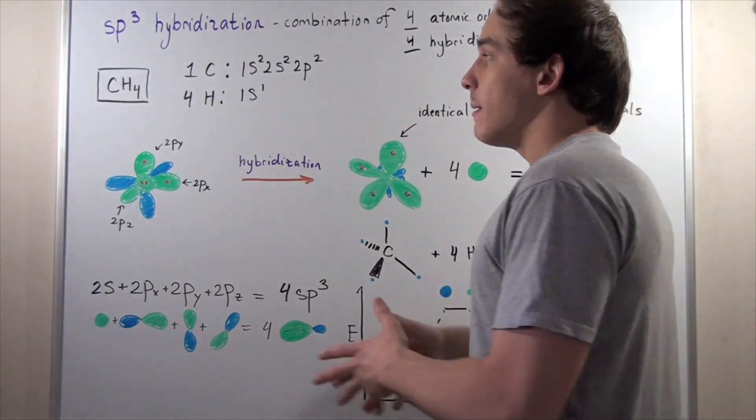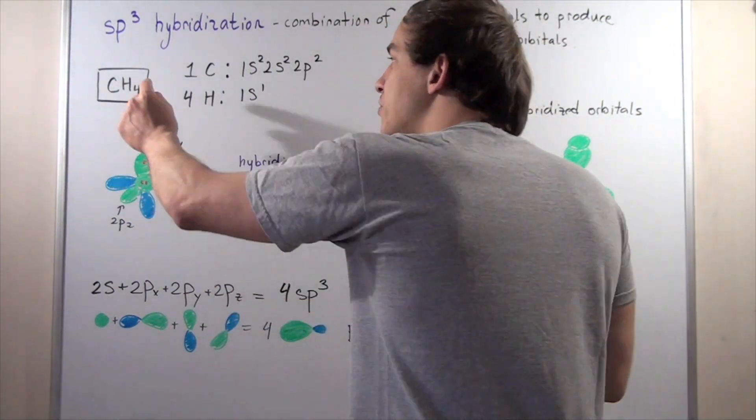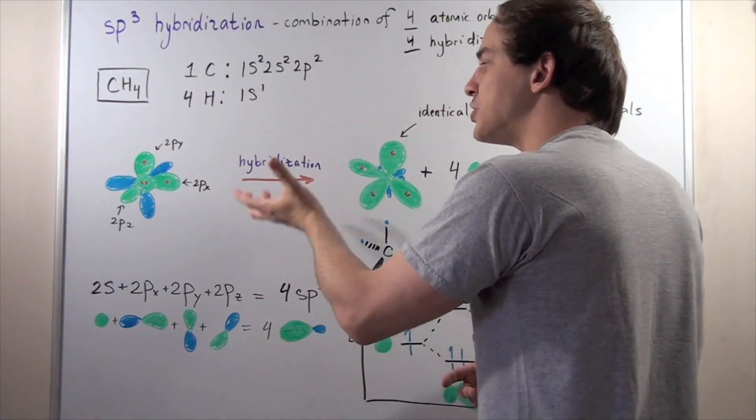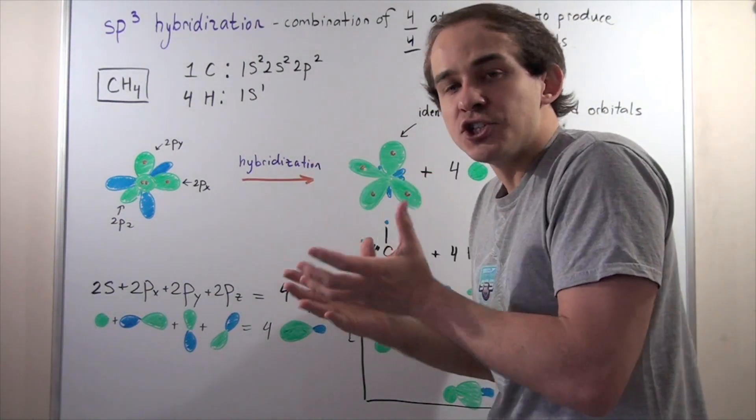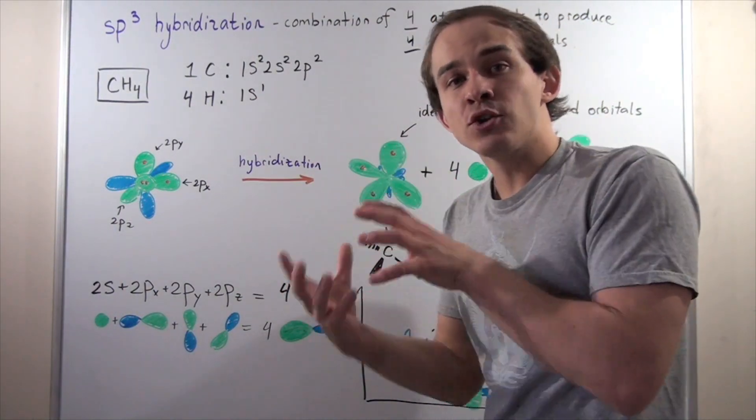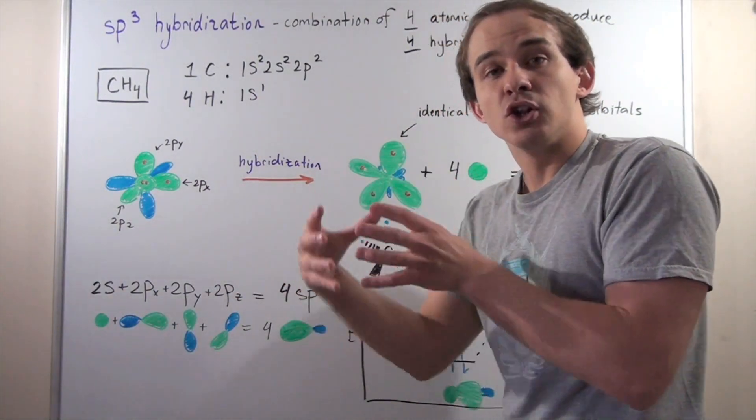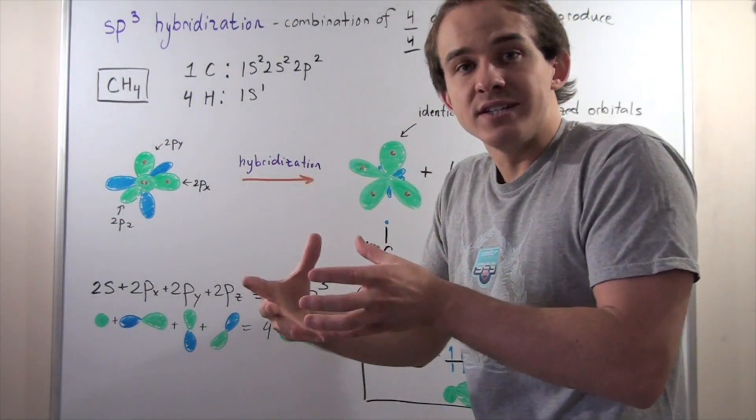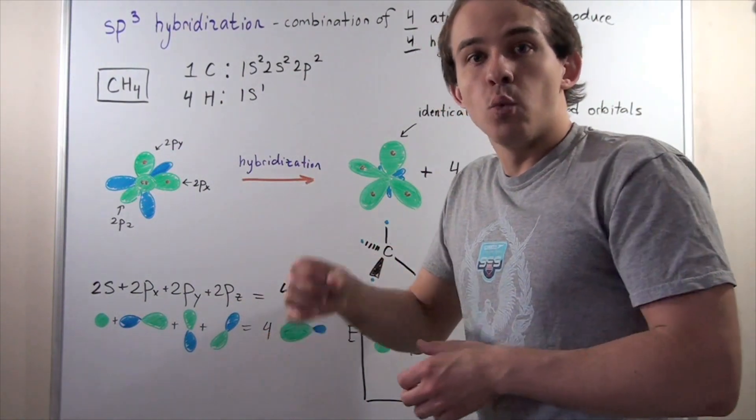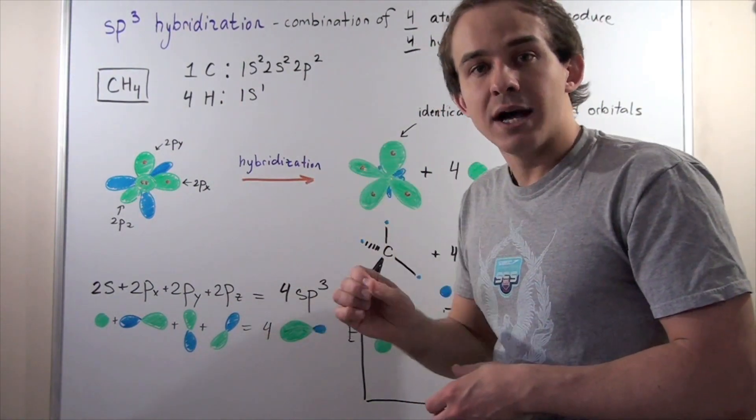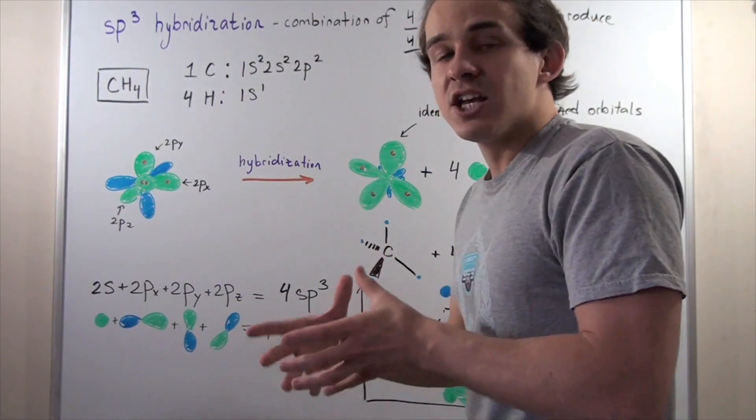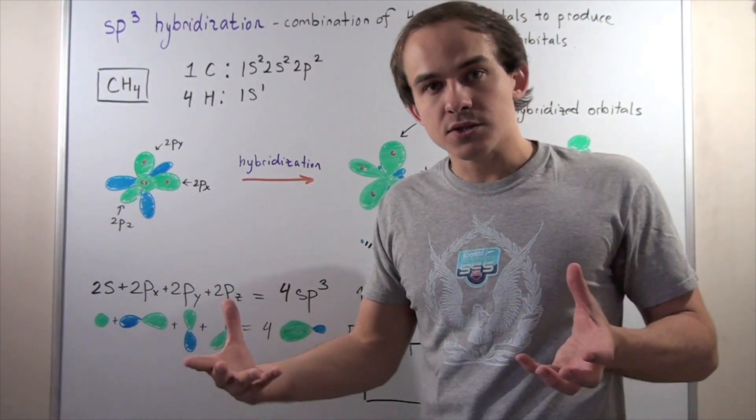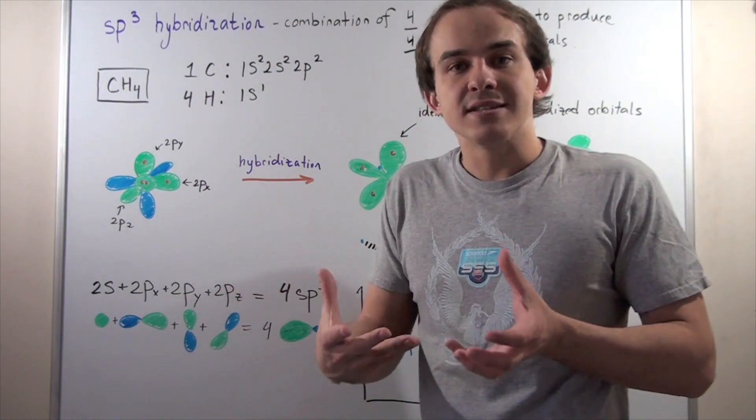Before the carbon can combine with the hydrogen atoms to form our methane, hybridization must take place. Remember, hybridization occurs because it increases the volume of the lobe interacting with the other atomic orbitals, and this increase in overlap will increase the strength of the bond. Hybridization takes place so that there is a better overlap between atomic orbitals, and this stabilizes the bond.